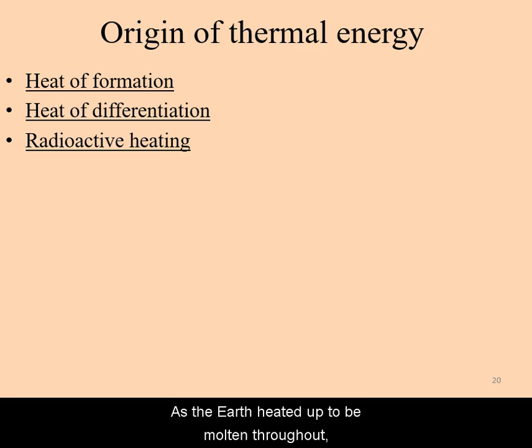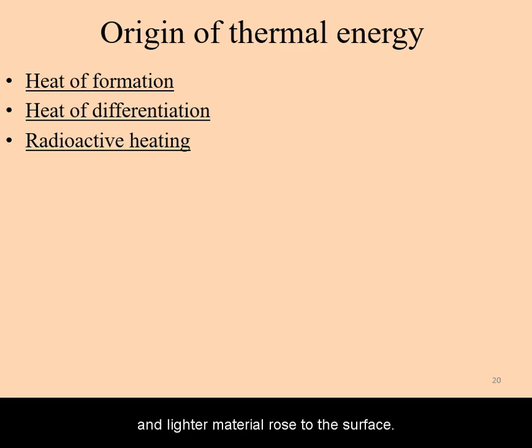As the Earth heated up to be molten throughout, denser material sank to the core and lighter material rose to the surface. This process released heat in the form of heat of differentiation.